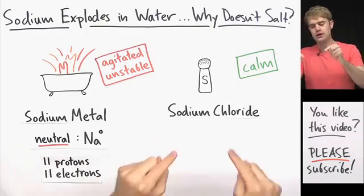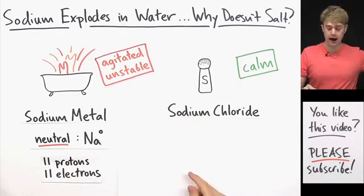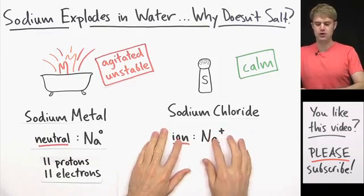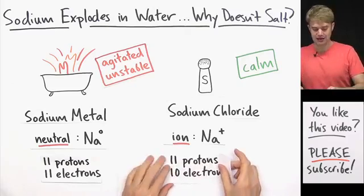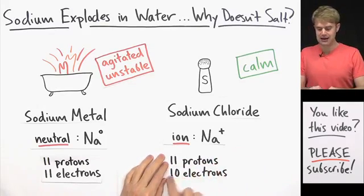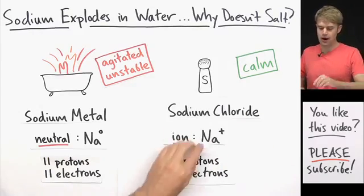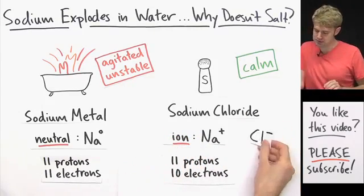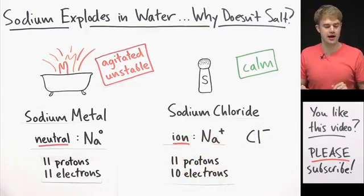On the other hand, the calm sodium atoms in sodium chloride are ions. They are sodium with a 1 plus charge. These sodium ions have 11 protons and 10 electrons. And this makes sense because in sodium chloride we have the Na+ and it's paired here with the Cl- forming an ionic bond.